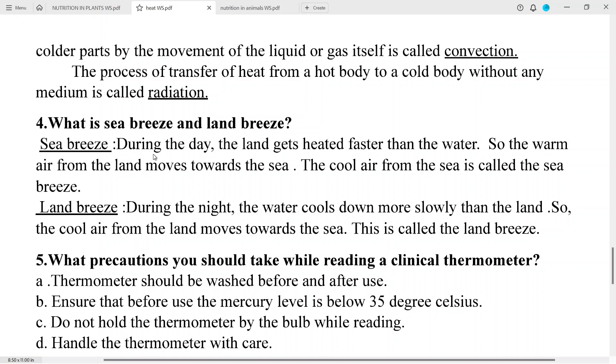Sea breeze: During the day the land gets heated faster than the water, so the warm air from the land moves towards the sea. The cool air from the sea is called the sea breeze. Land breeze: During the night the water cools down more slowly than the land, so the cool air from the land moves towards the sea. This is called the land breeze.